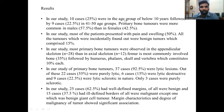Results. In our study, 10 cases were in the age group below 10 years, followed by 9 cases in the 41 to 58 years group. Primary bone tumors were more common in males than in females. Most patients presented with pain and swelling; all tumors incidentally found were benign, comprising 15%. Most primary bone tumors were observed in the appendicular skeleton. The femur was the most commonly involved bone, followed by humerus, phalanx, skull, and vertebra, each constituting 10%.